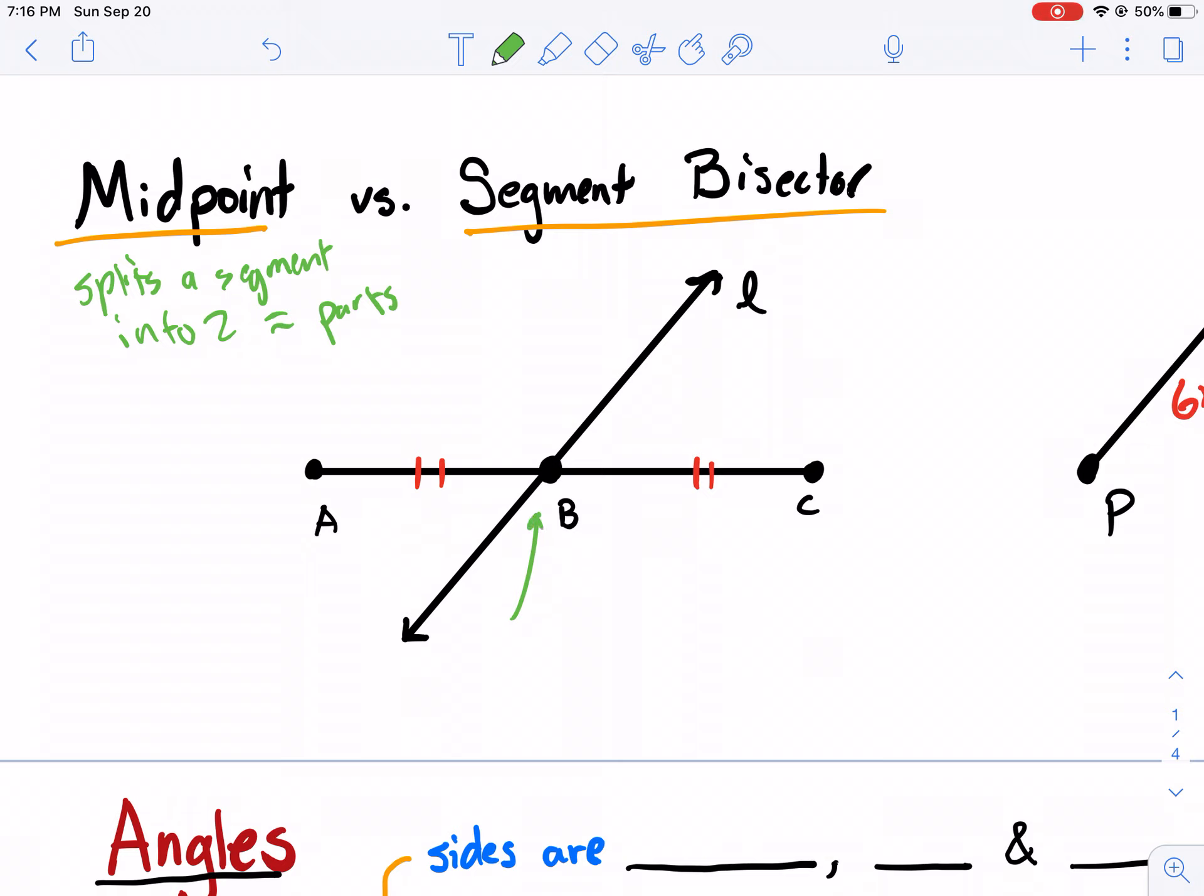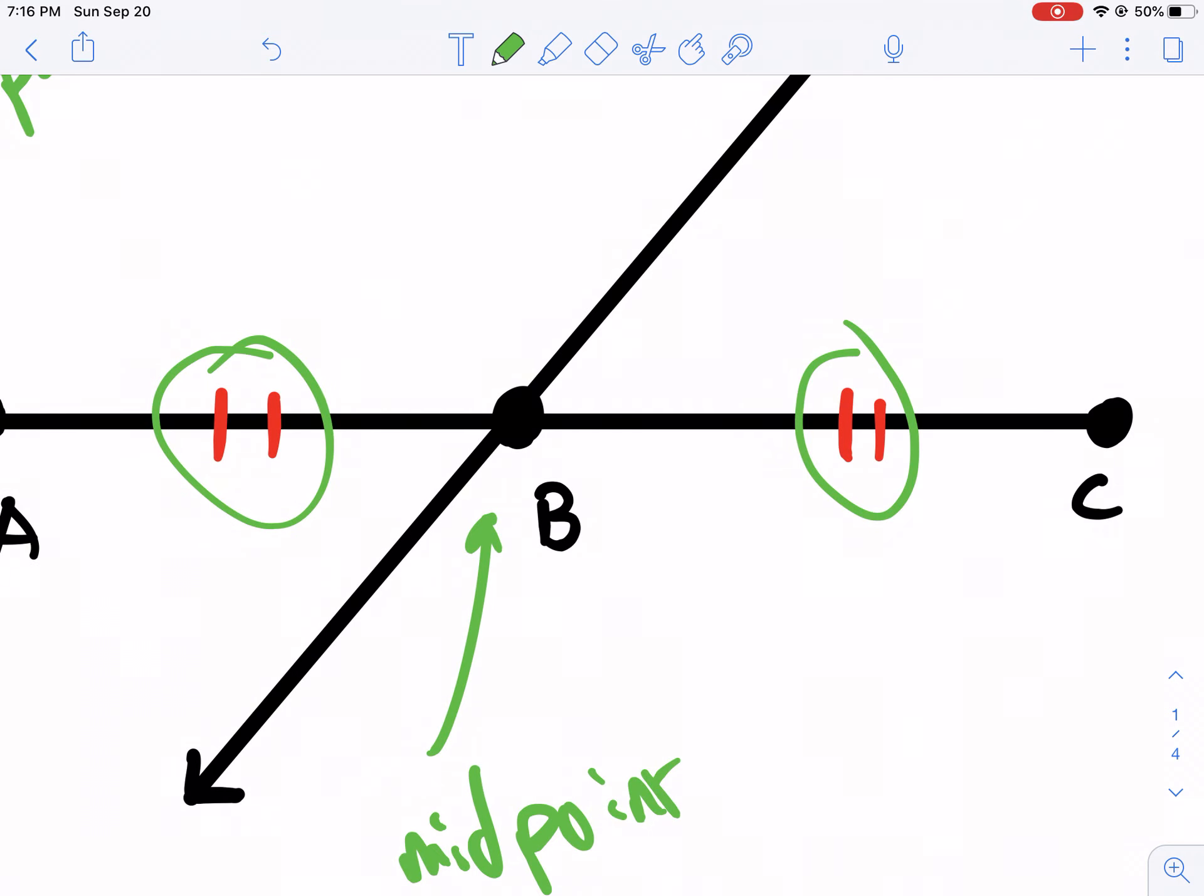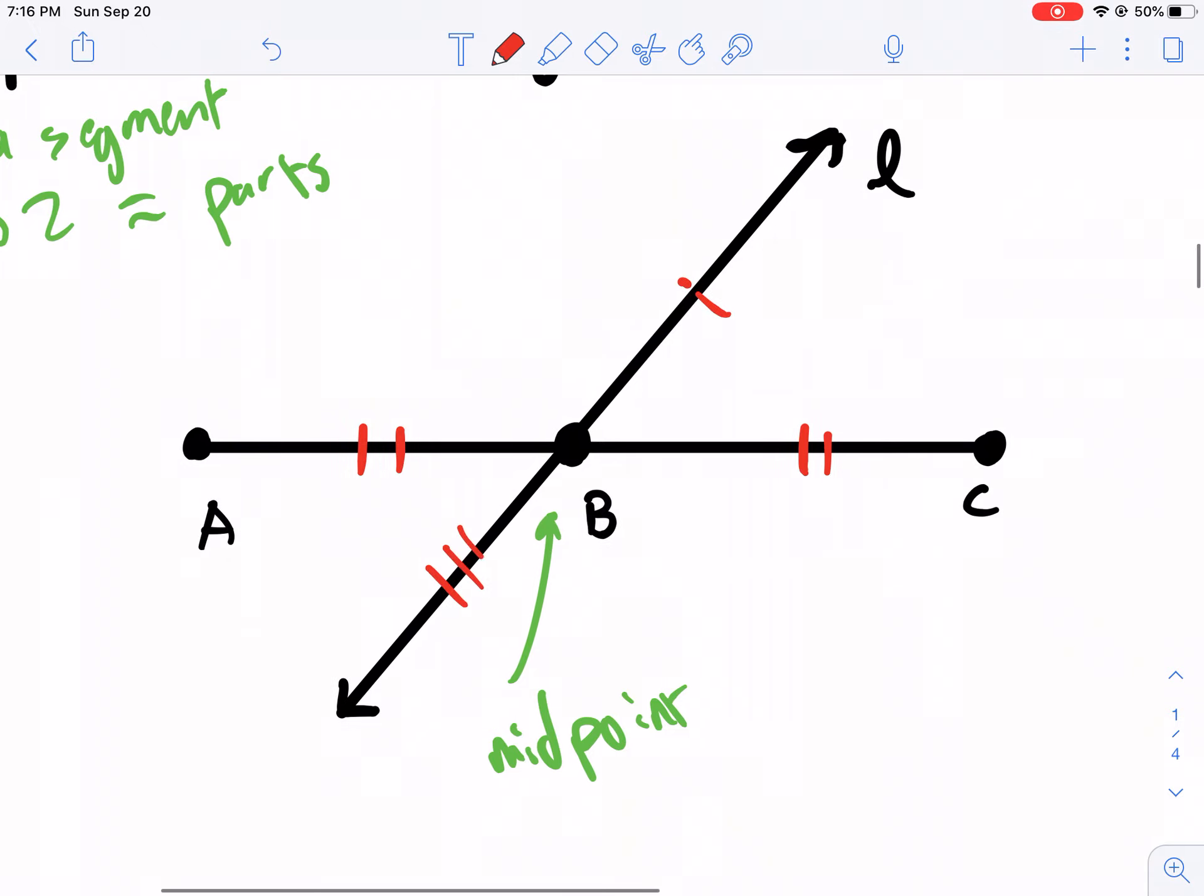So here we have, this is the midpoint. And I know it's a midpoint because it divides the whole segment AC into two smaller segments BC and AB. And how do I know that they're the same? That's what these lines are for. So these lines tell you that those two segments have the same length. So because this has two little dashes, the other one has two little dashes, they're the same length. If this one had one little dash and this one had one, they would be the same. But if this one has three and that one has one, these two are not the same.